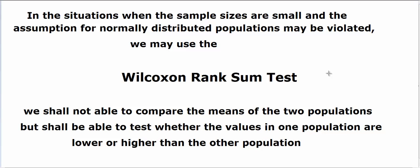Now, we call it non-parametric because we would not be able to compare the means of the two populations in the manner of our previous calculations, but we may still be able to see whether the values in one population are lower or higher than the other population, or whether the shift is to the right or to the left.